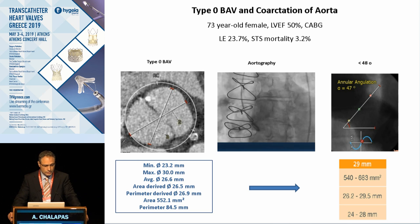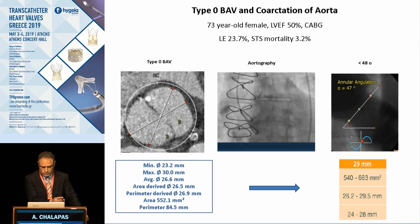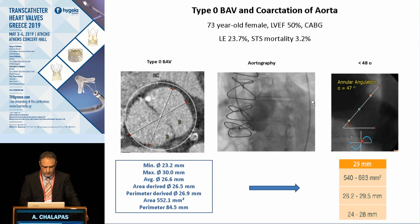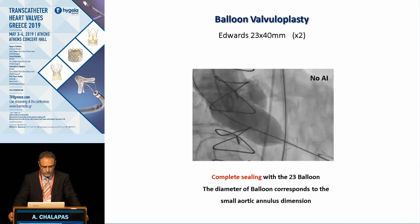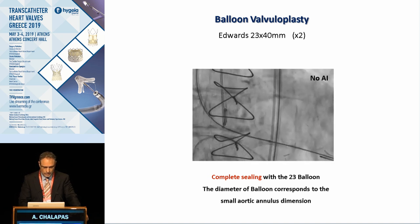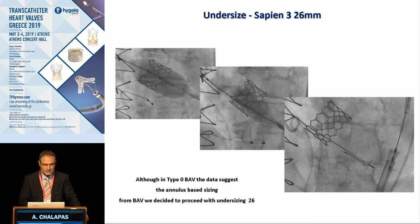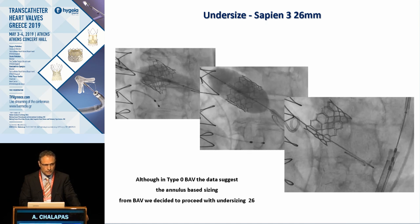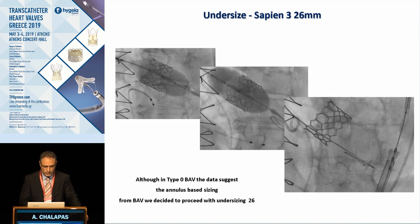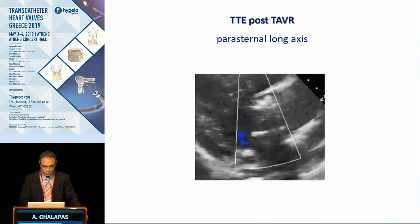Here is an example of a type 0 bicuspid valve with coarctation. According to the anatomical information, we decided to proceed with a SAPIEN 3 valve, 29 mm. There was significant calcification at the level of the annulus, the ascending aorta was not so dilated, and it was not horizontal. We started with valvuloplasty using an Edwards 23 mm balloon, achieving complete sealing with no AI. Based on the balloon valvuloplasty result, we decided to undersize, using a SAPIEN 3 26 mm instead of 29 mm, with an excellent hemodynamic and echocardiographic result.